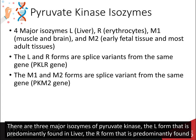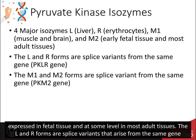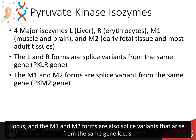There are three major isozymes of pyruvate kinase: the L-form that is predominantly found in liver, the R-form that is predominantly found in erythrocytes, the M1-form in muscle and brain, and the M2-form that is expressed in fetal tissue and at some level in most adult tissues. The L- and R-forms are splice variants that arise from the same gene locus, and the M1 and M2-forms are also splice variants that arise from the same gene locus.